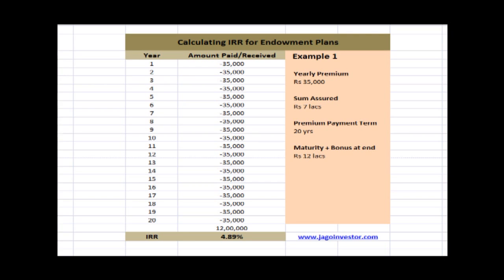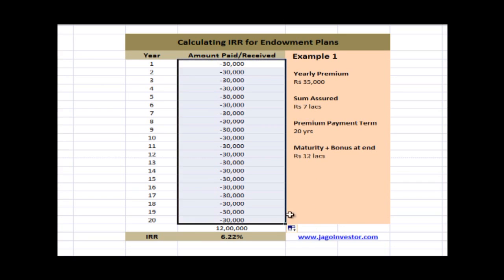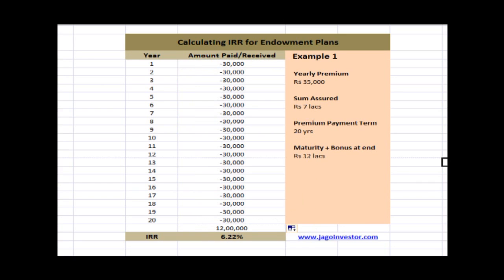For example, if your premium was 30,000 rupees per year instead, you would put 30,000 per year. Selecting the same 20-year range, you can see the IRR changes to 6.22%. This was a simple endowment plan example. Next we'll look at a money back plan.